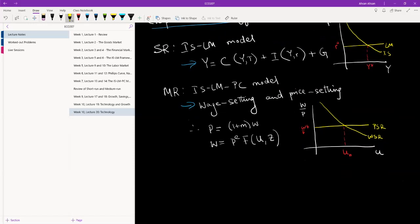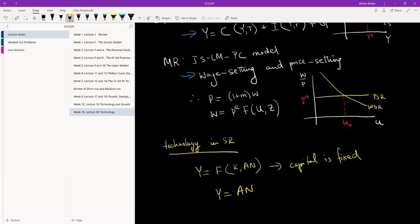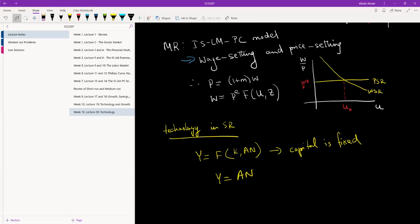We don't really need to look at Phillips curve for what we are about to do. What we will focus on instead is the price setting and the wage setting relationship. So let's get started with short run technology. In long run, the equation that we have used is Y is a function of capital and effective work.